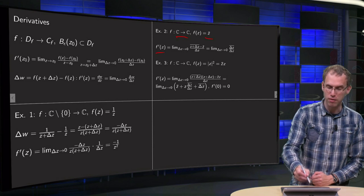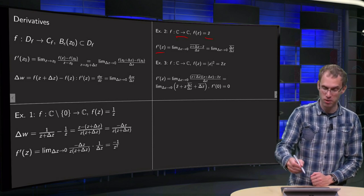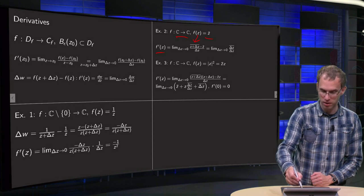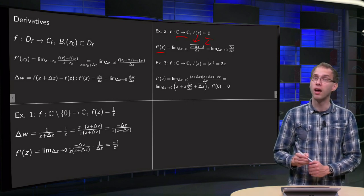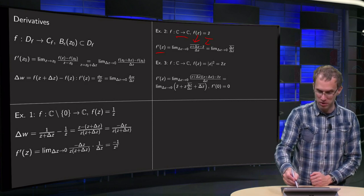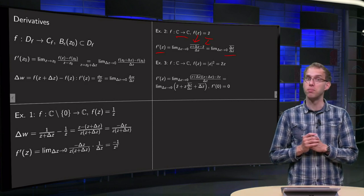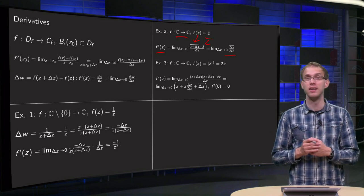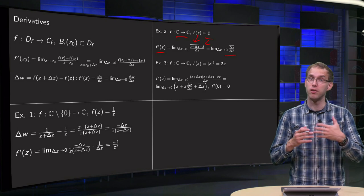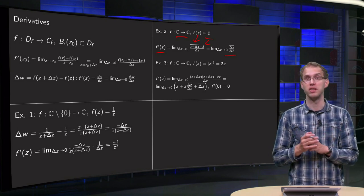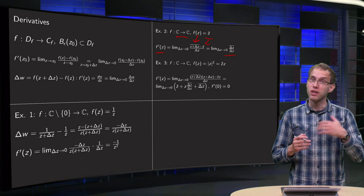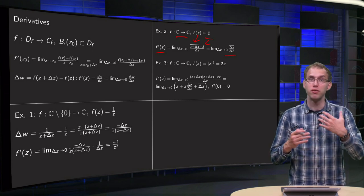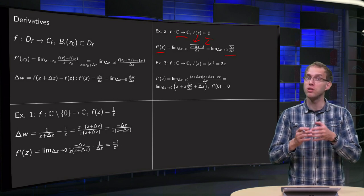Then for f prime of z, again we take the limit delta z to 0 of delta w. So z plus delta z bar minus z bar. We see the z bars cancel out and we get the limit z to 0 of delta z bar over delta z. Well, this limit does not exist, which means that the function is not differentiable at no point z at all. So here you see already a difference arising with the real functions. Function z bar doesn't look so bad, but still it's not differentiable.